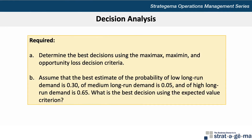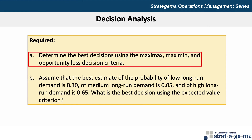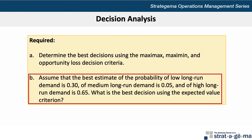There are two requirements for this problem. First, requirement A is to determine the best decisions using maxi-max, maxi-min, and opportunity loss decision criteria. Second, or requirement B, is — assuming that the probability of low long-run demand is 0.3, medium long-run demand is 0.05, and high long-run demand is 0.65 — what's the best decision using the expected value criterion?